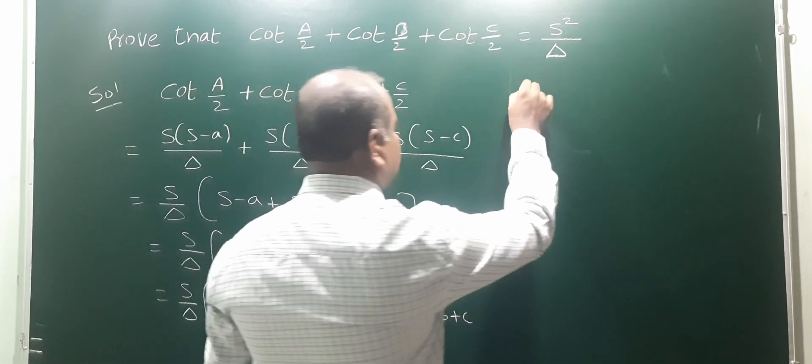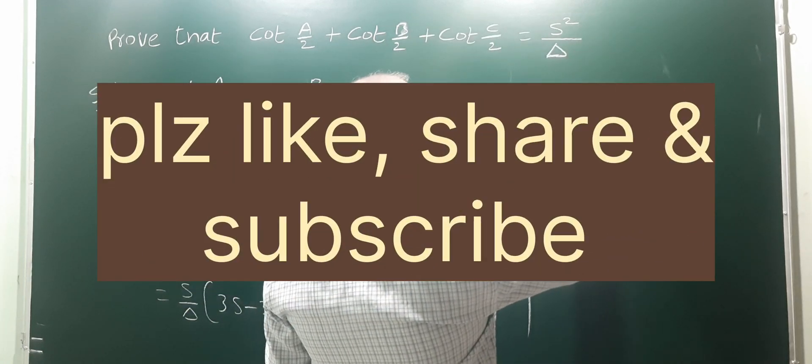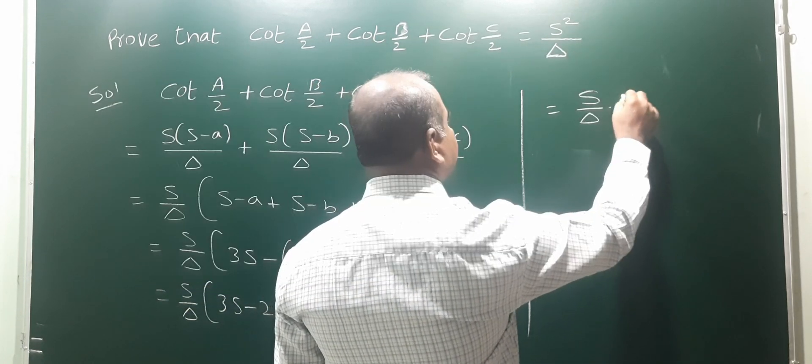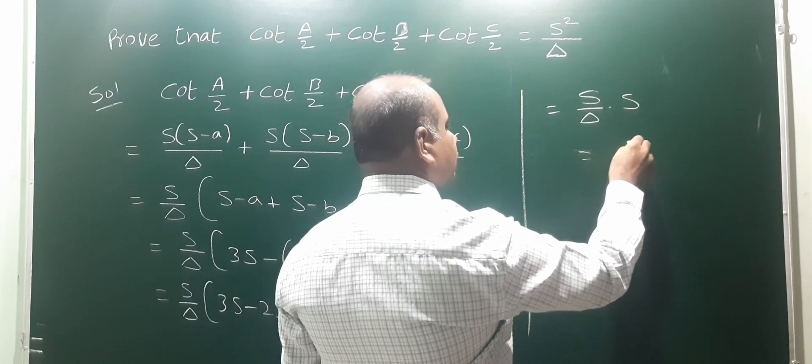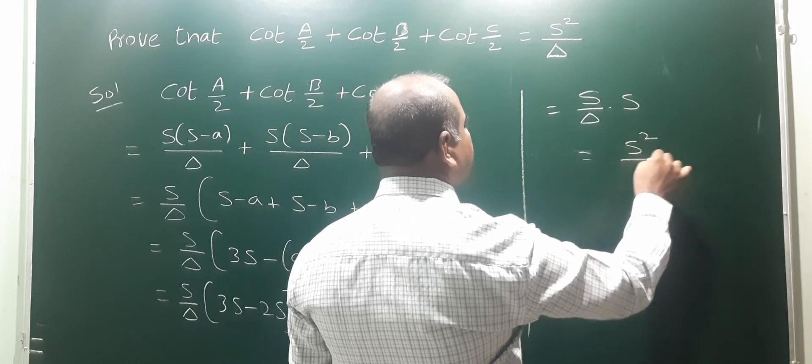So s/Δ times [3s - 2s] equals s/Δ times s, which gives us s²/Δ.